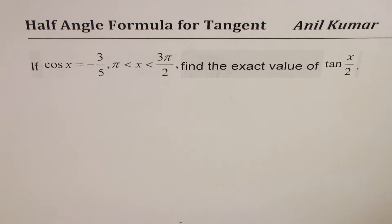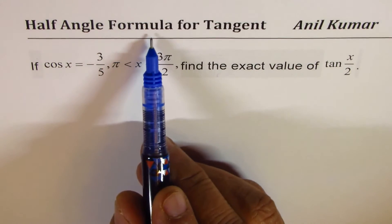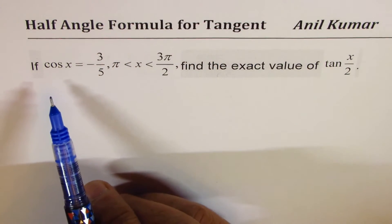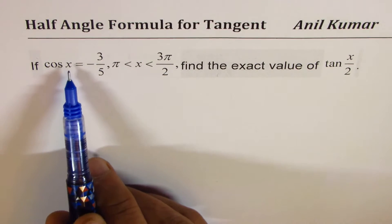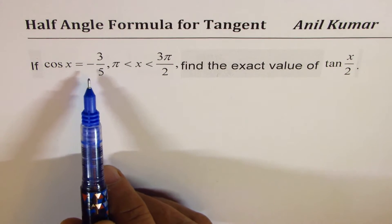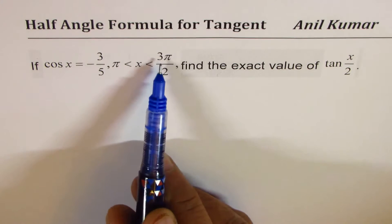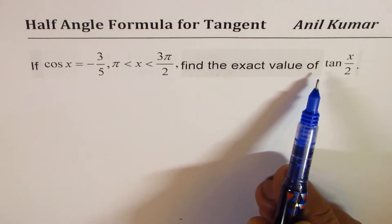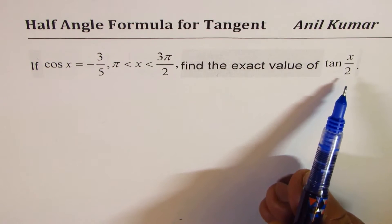I'm Anil Kumar. In this particular video, we'll do the derivation for the half-angle formula for tangents. And then we'll solve this particular equation: if cos x equals minus 3 over 5, where x is between pi and 3 pi by 2, find the exact value of tan x by 2 — that is the half-angle.